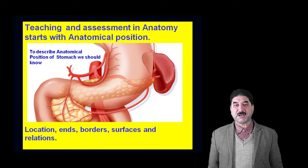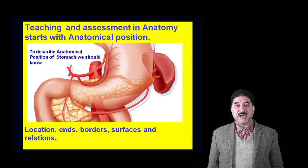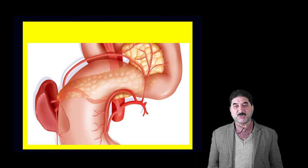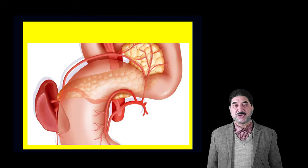Now if we change the position of the stomach upside down, the description of its borders, surfaces, and anterior and posterior relations becomes difficult. As shown in this figure, the stomach is not in the anatomical position, so its description becomes difficult.